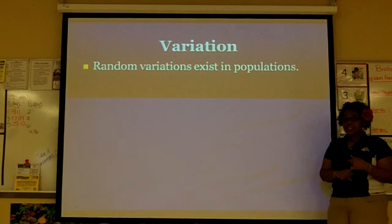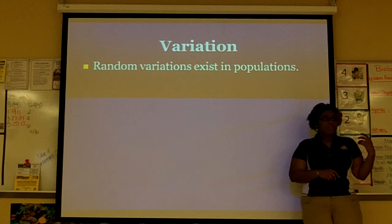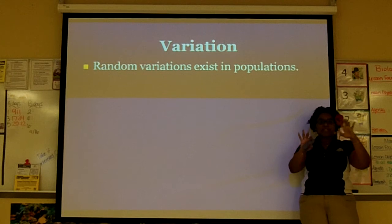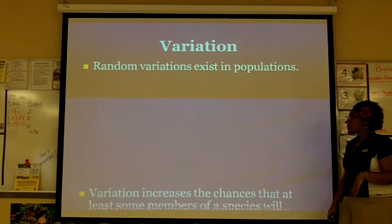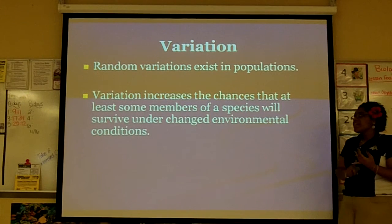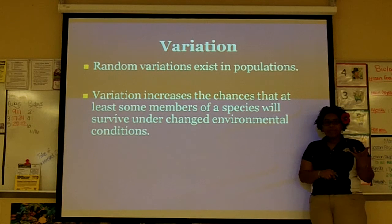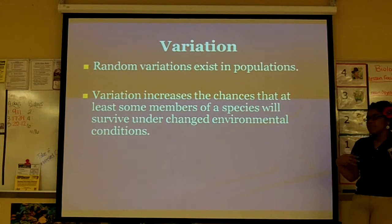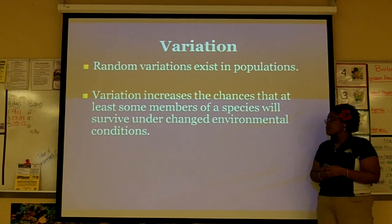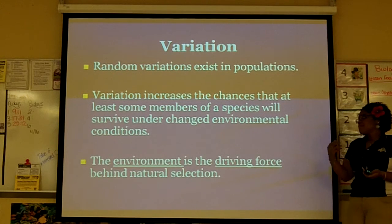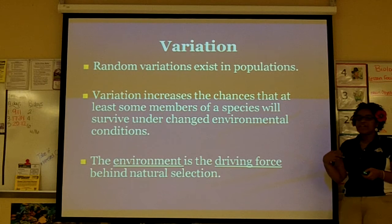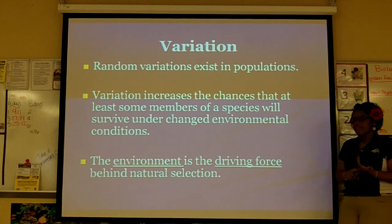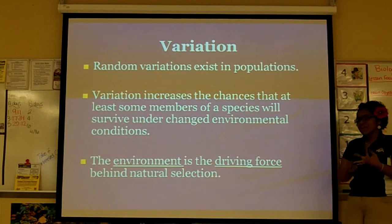Random variations exist in a population — just like some people have blue eyes, brown eyes, green eyes, hazel eyes; there are all these different variations. Variation increases the chances that some members of a population will survive and reproduce under changing environmental conditions. The environment is the driving force behind natural selection. Variation, environment, natural selection.